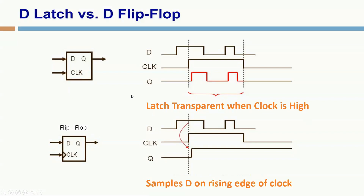Before going deep into the subject, I want to tell you a few very interesting facts about the nomenclature of a latch and a flip flop. This is a positive level sensitive latch. It passes D to Q when the clock signal is high, as shown in the figure. When clock is high, D is passed to Q, and when clock is low, it will remain in its previous state — latched, or we call it output is latched.